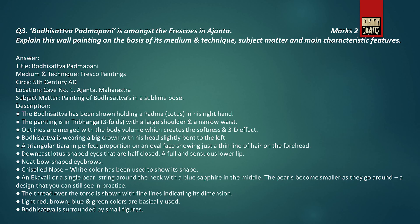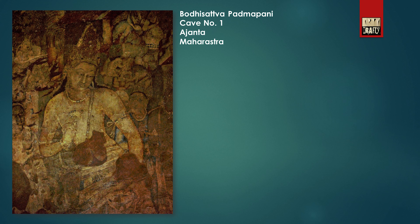In question number three, you have to write about the fresco painting Bodhisattva Padmapani of Ajanta, Maharashtra, and you have to explain it on the basis of its medium, technique, subject matter, and main characteristic features. This is the fresco of Bodhisattva Padmapani of Cave number one, Ajanta, Maharashtra.